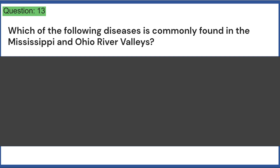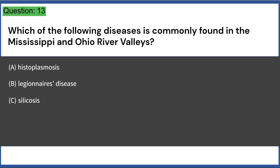Which of the following diseases is commonly found in the Mississippi and Ohio River valleys? A. Histoplasmosis, B. Legionnaire's disease, C. Silicosis, D. Anthracosis, E. Asbestosis. Answer: A.